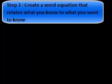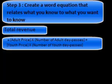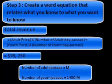It's time for Step 3. We're going to create a word equation that relates what we know to what we want to know. Here's our word equation: total revenue equals the adult price times the number of adult day passes sold, plus the youth price times the number of youth day passes sold. This all equals $78,250. In Step 4, we'll move this word equation and turn it into an algebraic expression. The number of adult passes equals m, and the number of youth passes equals 1,430 minus m.